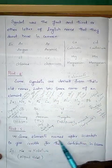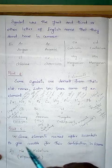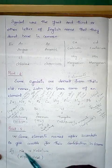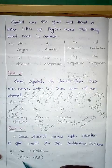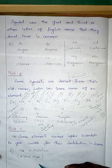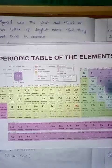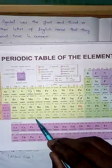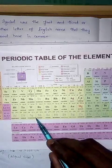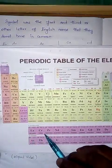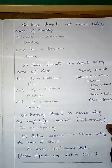These are the 11 elements whose symbols are derived from their old Latin or Greek names. Point five: some elements are named after scientists to give credit for their contributions. Examples include nobelium, named after Alfred Nobel, as well as bohrium after Niels Bohr, seaborgium, and rutherfordium — all examples in this category.